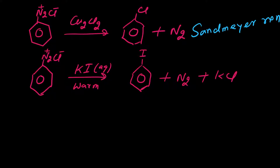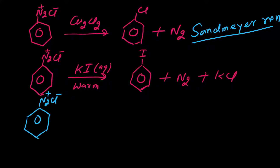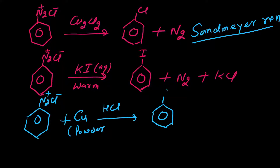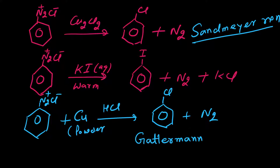Chlorobenzene की formation benzene diazonium chloride से Sandmeyer reaction से होती है। Next, अगर हम benzene diazonium chloride का reaction copper powder के साथ करते हैं और थोड़ा HCl डालते हैं, तो फिर से chlorobenzene बनेगा plus N2 निकल जाएगा। लेकिन यह different reaction है — इस reaction का नाम है Gattermann reaction। Gattermann reaction में copper chloride की जगह copper powder use होता है HCl के साथ।